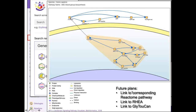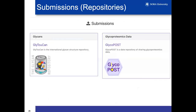In future plans, we also want to link to Rhea as well as Glytucan. There are glycans referenced in Reactome that don't yet have Glytucan IDs, so we need to work on getting that implemented.